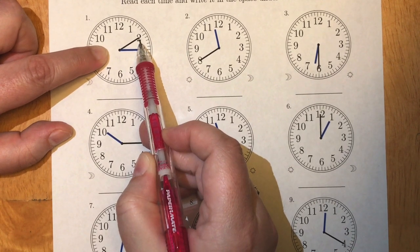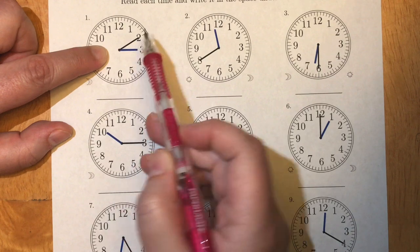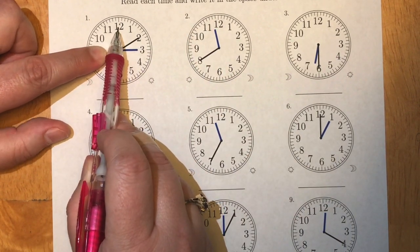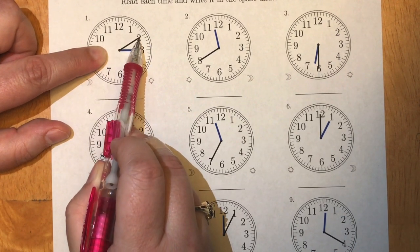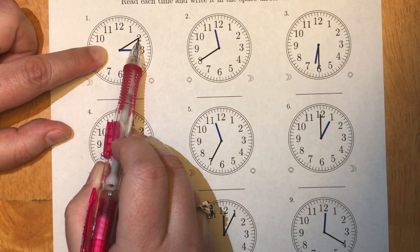Now remember every number on the clock stands for five minutes. We start here at the twelve and we're gonna count around by fives. Five, ten. So right now we're at ten minutes after the start of the hour.